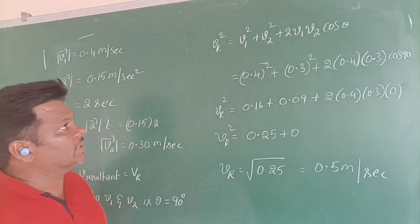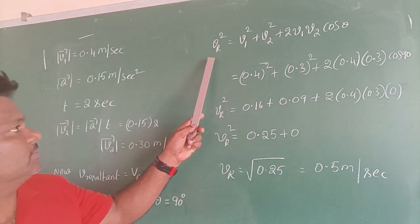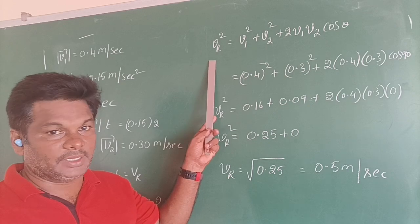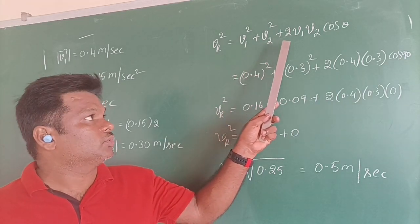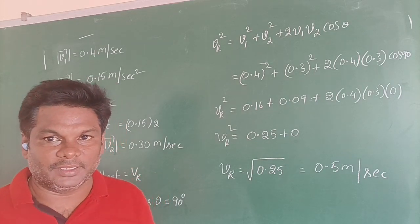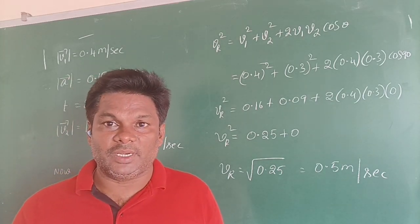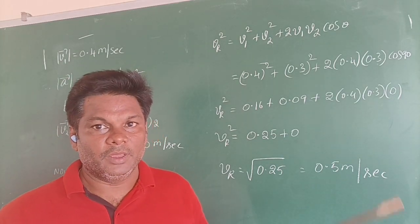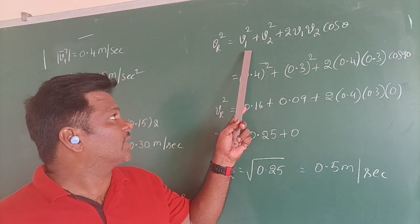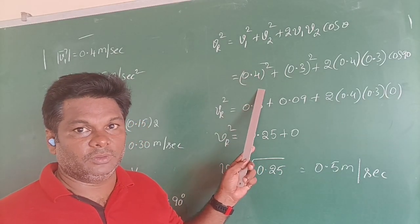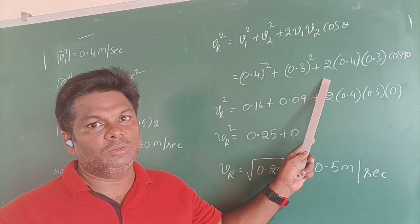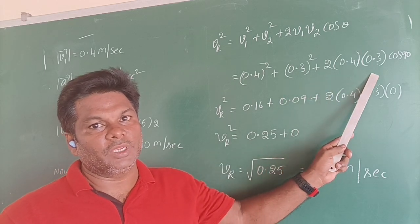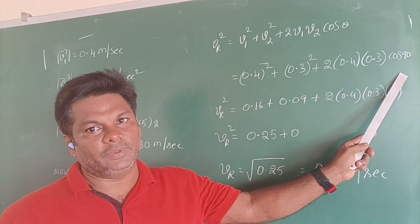For that, what is our resultant velocity? VR square is equal to V1 square plus V2 square plus 2V1V2 cos theta. Theta is angle between V1 and V2. Now V1 we will write 0.4, V2 you are writing 0.3, plus 2V1V2 cos theta.